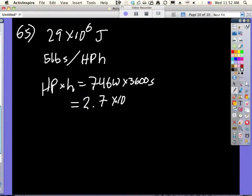2.7 times 10 to the 6th joules. So you put in 5 pounds of coal and you get that many joules out of it. And then this is that many joules per kilogram.